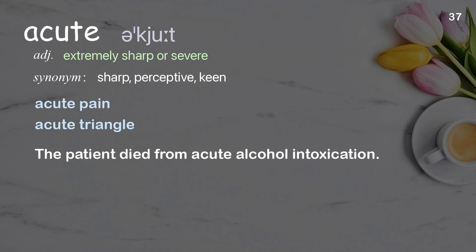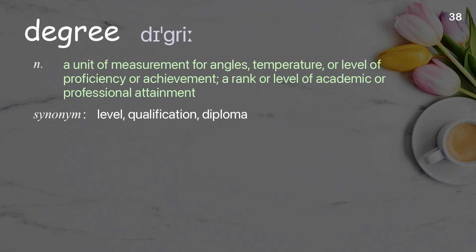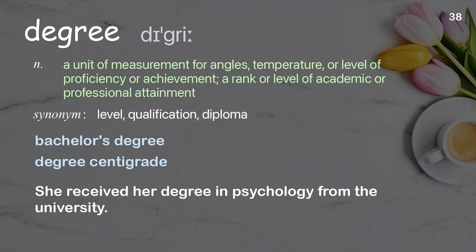Degree: a unit of measurement for angles, temperature, or level of proficiency or achievement; a rank or level of academic or professional attainment. Examples: bachelor's degree, degree centigrade. She received her degree in psychology from the university.